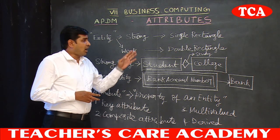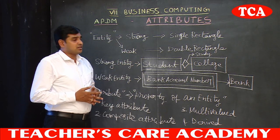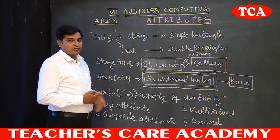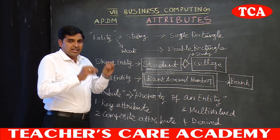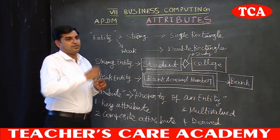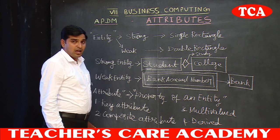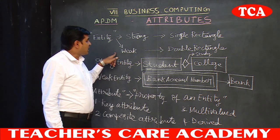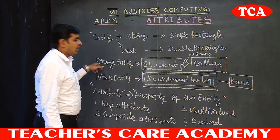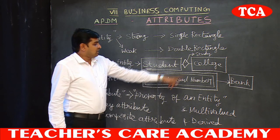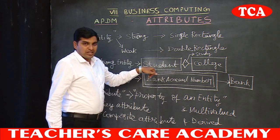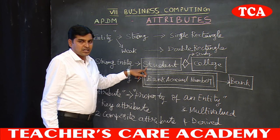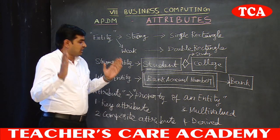In the Entity Relationship Model, we have relationships and attributes. An entity is a strong entity with its own unique identity. For example, a student who studies in a college: 'study' is the relationship, 'student' is one entity, 'college' is another entity. Both are unique identities.